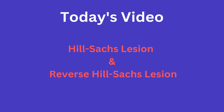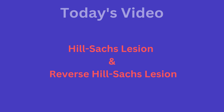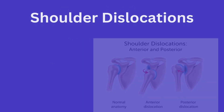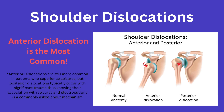To start, the most common way a shoulder is dislocated is anteriorly, with posterior dislocations being seen more commonly in patients who experience seizures or electrocutions. Understand that anterior dislocations are the most common.